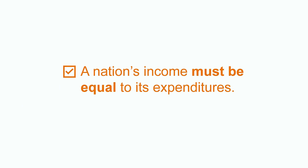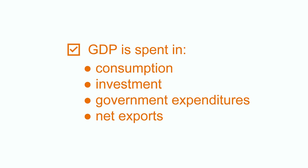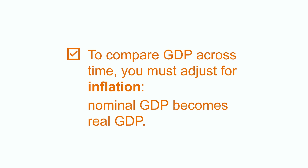A quick recap. We have seen in this class that a nation's income must be equal to its expenditures. The GDP is the sum of all goods and services produced in an economy. GDP is spent on consumption, investment, government expenditures, and net exports. In order to compare GDP across time, one must adjust for inflation. Nominal GDP becomes real GDP. The GDP is a very important indicator in order to assess the health and growth of a nation's economy.